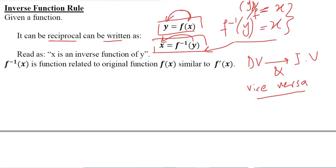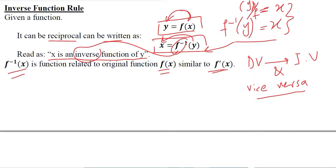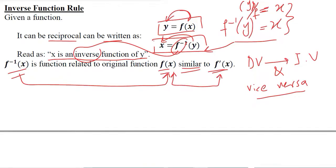This is the same thing written in certain terms: x is now an inverse function of y. X is an inverse function of y. F-inverse of x is a function related to the original f similarly. There is a relationship between these two variables, and this relationship is similar to the relationship between the original function and the derivative — but it is not the same. We must not be mistaken; it is just a similarity that we are trying to highlight here.